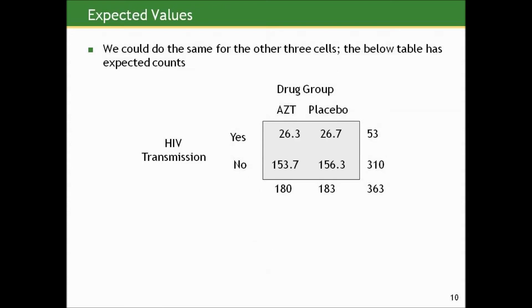We can do the same for the other three cells. And actually, once you have one of the four cells, you can get the other three. You don't have to go through that formula again. You could just get them by subtracting from the row or column totals appropriately. But you can see that under the null, we had about the same number of infants in each of the two groups. And under the null, we'd expect about the same number of cases of HIV. So that makes perfect sense. If there were no difference in the proportion contracting HIV between the AZT and placebo, which is the null, we'd expect to see the same proportion in each group, which turns out to be about the same number because the groups are similar in size.